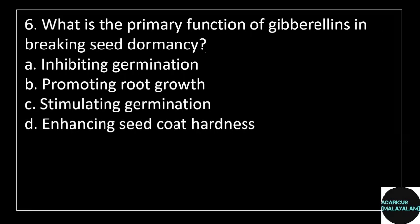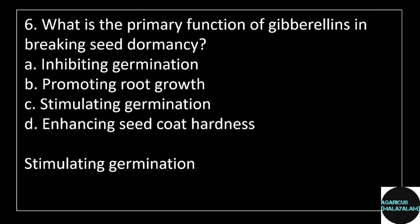Sixth question: What is the primary function of Gibberellin in breaking seed dormancy? Answer options — Option A: Inhibiting germination, Option B: Promoting root growth, Option C: Stimulating germination, Option D: Enhancing seed coat hardness. Correct answer: Option C, Stimulating germination.